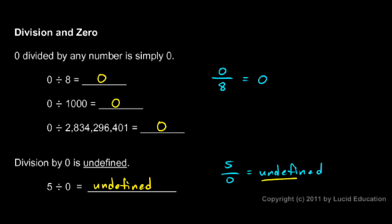So if you have a fraction and there's a zero up top, the answer is zero. But if there's a zero in the denominator, we can't do it. Division by zero is undefined.